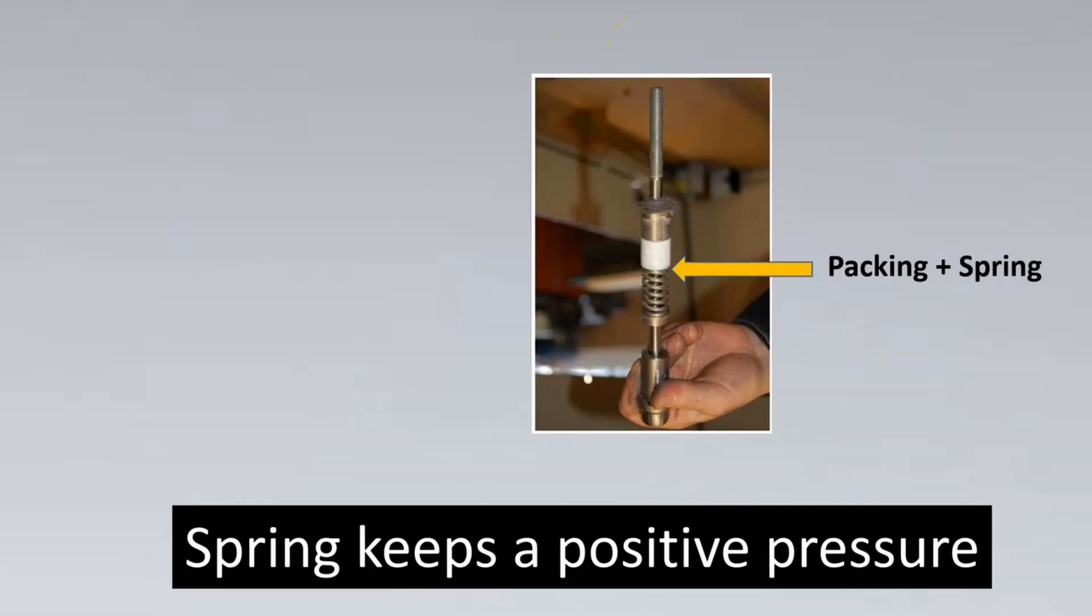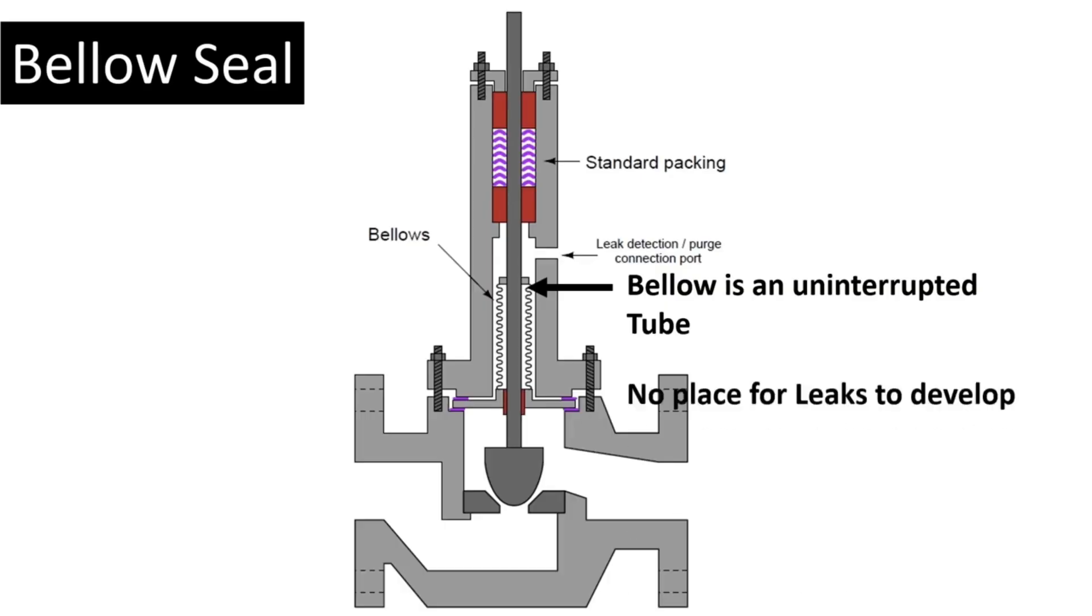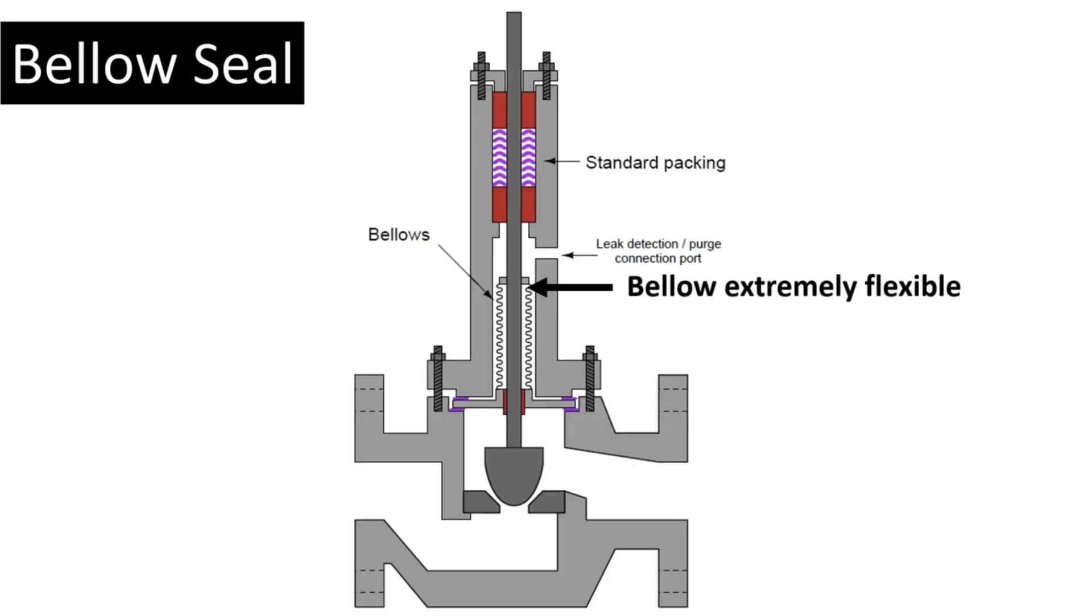Do we have another amazing way? Yes, we do. The next amazing way is something called bellow seal. This is a level up even than live loading. Here's your standard packing which is available. Here are your bellows and here's something called the leak detection port. Let's first focus on the bellow. Bellow is an uninterrupted tube, and if you see, it has no place for leaks to be developed.